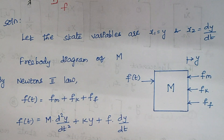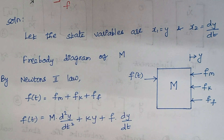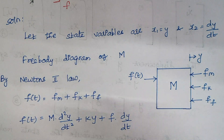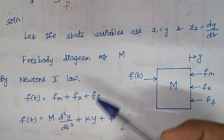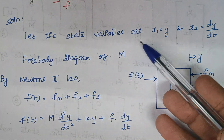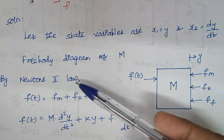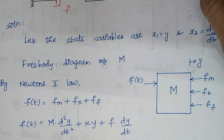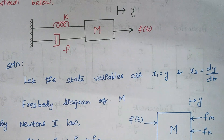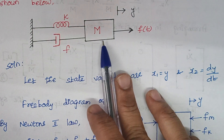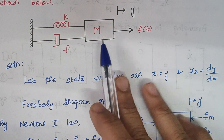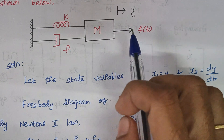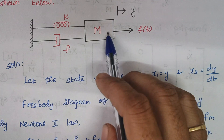The first step is we have to draw the free body diagram. First, draw the free body diagram and write the force balance equations, and then we will move to state variables. We have to draw the free body diagram of this mass m. When you look back, count how many elements are connected with this mass — we are having 1, 2, and 3. Apart from that, there will be another force which is produced by the mass itself.